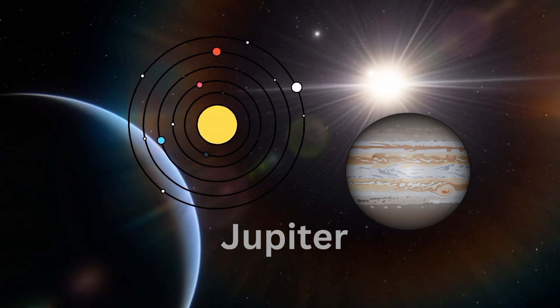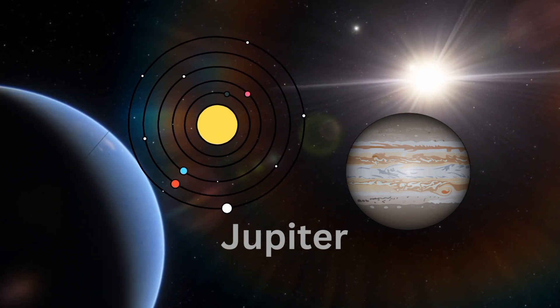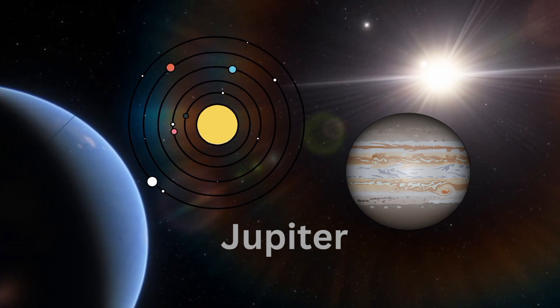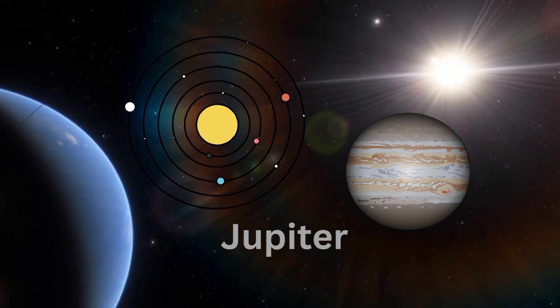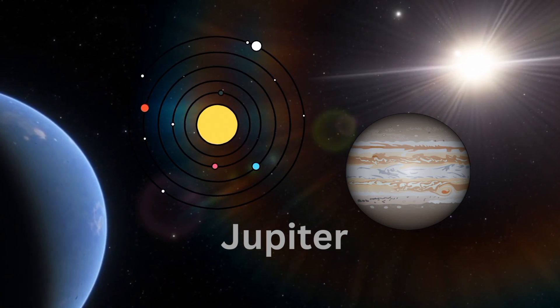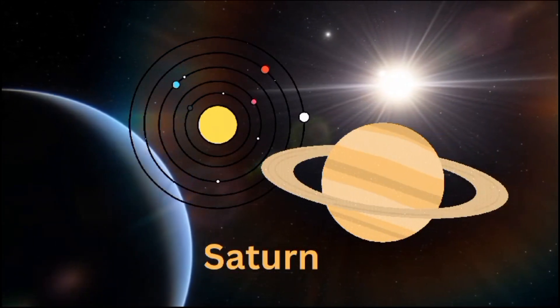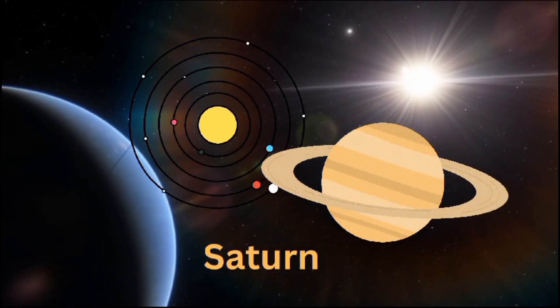My name is Jupiter. I am covered in clouds. I'm the fifth planet from the Sun. My giant red spot is a raging storm. As for size, I'm the biggest one.